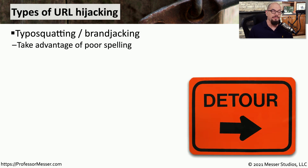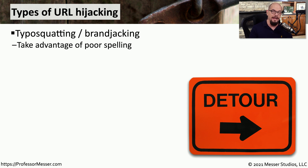There are a number of different ways that an attacker might use this difference in URL to their advantage. One way is to take advantage of bad spelling. A domain like professormesser.com has many opportunities for misspellings, and an attacker might buy multiple domain names in the hopes that someone might type it in incorrectly and visit their website instead.